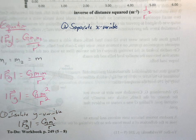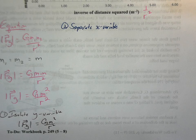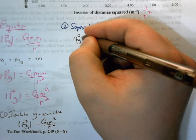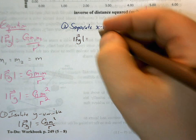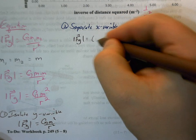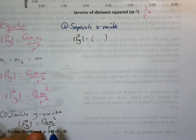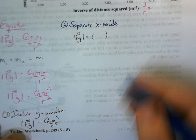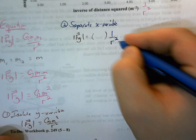So to separate the X variable, I still have this lovely FG equals. So now I'm going to put brackets here, what's left. So I'm going to take this one over r squared bit, and I'm going to put it out here.